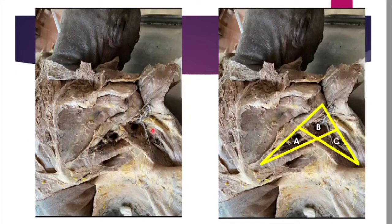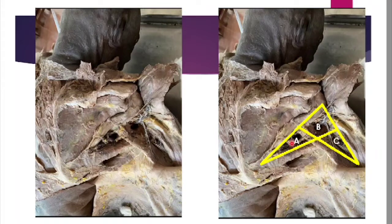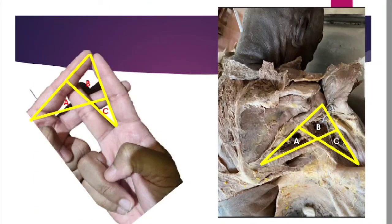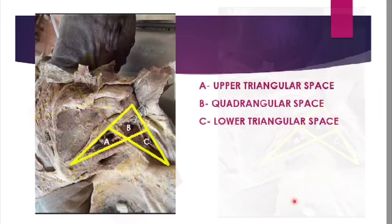Now let's have a clear look at the spaces marked A, B, and C. A and C are triangular spaces — A is the upper triangular space and C is the lower triangular space — whereas B is a quadrangular space. Placing your fingers in this position is an easy method to learn the intermuscular spaces.